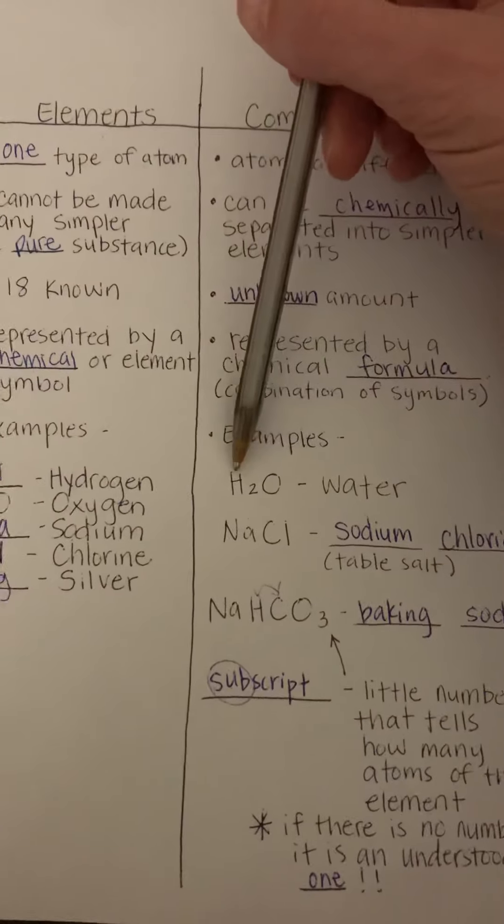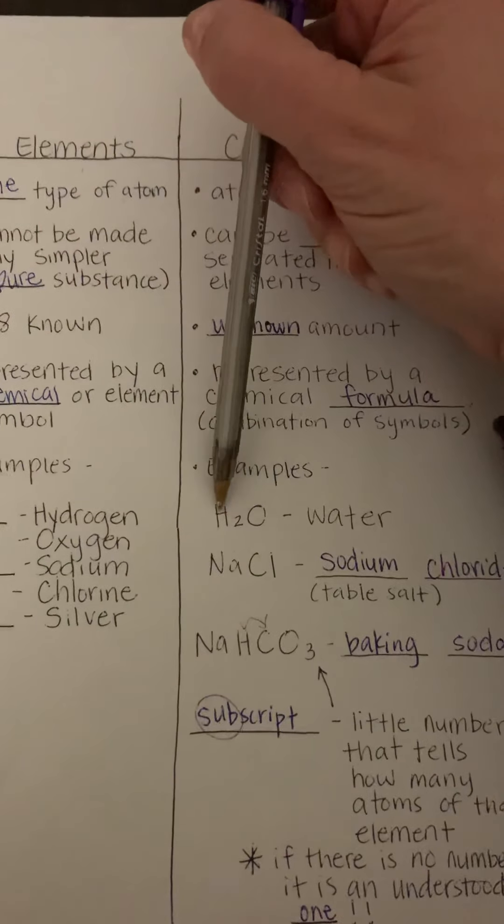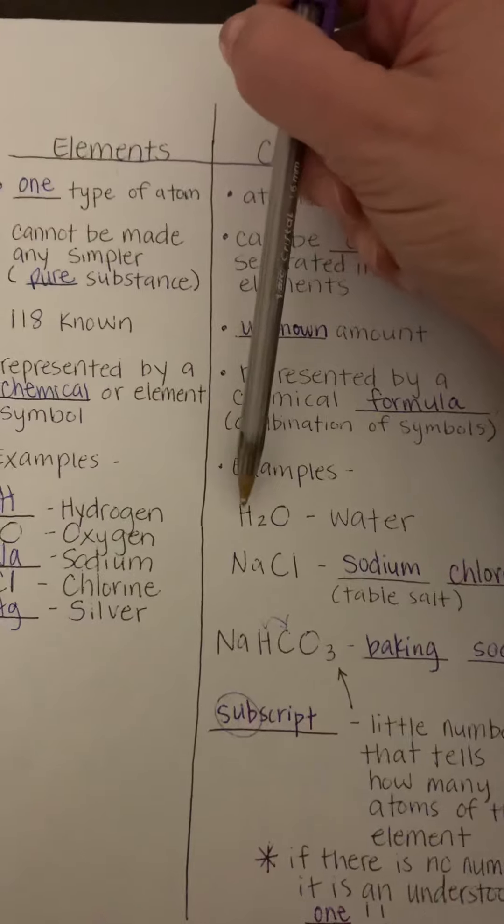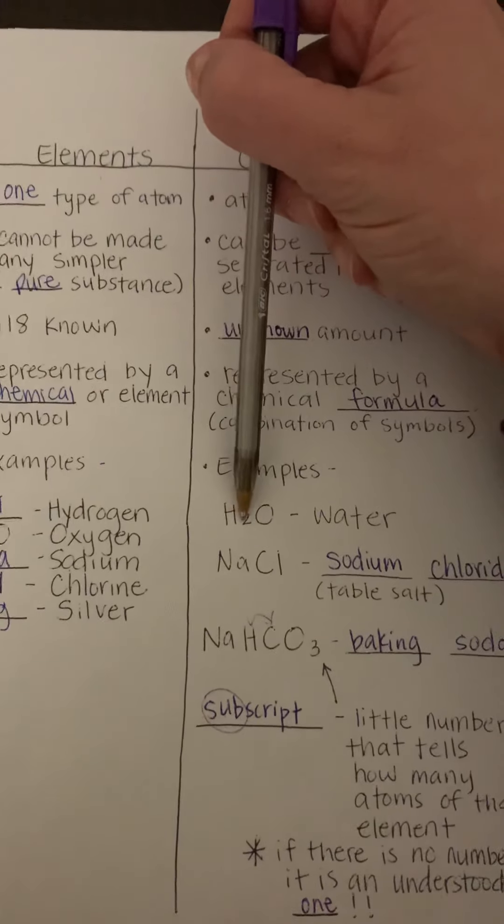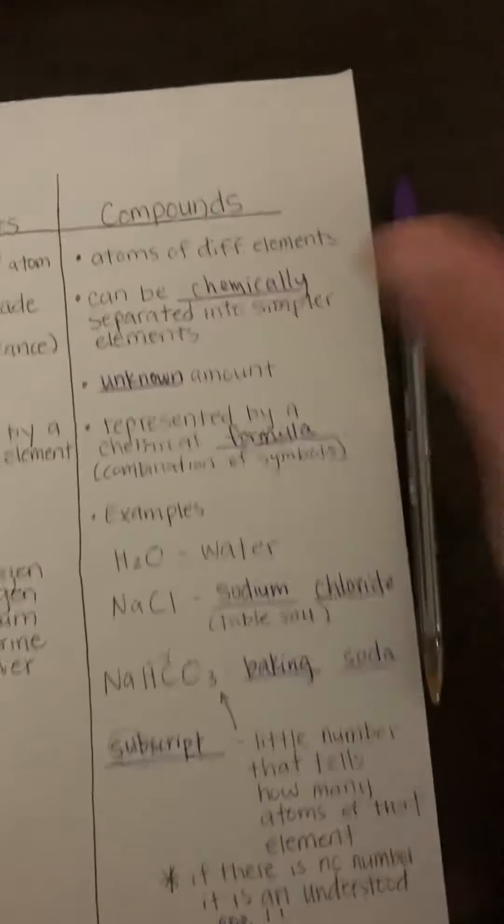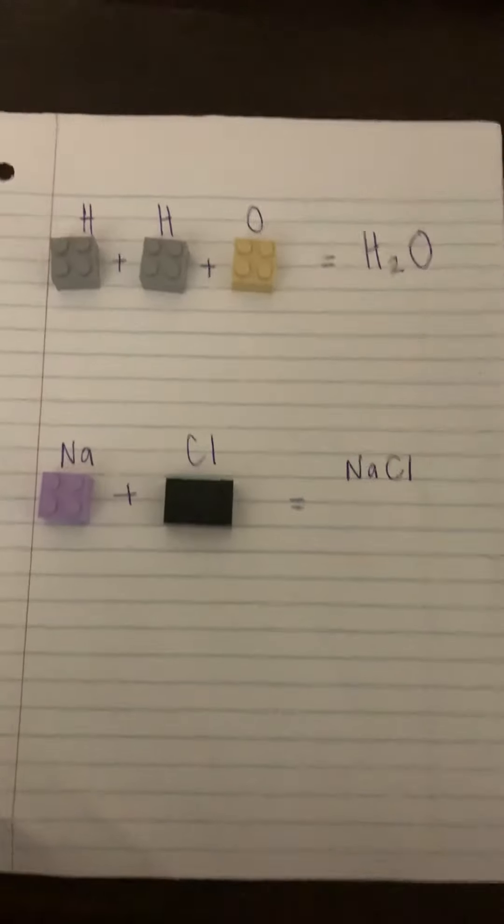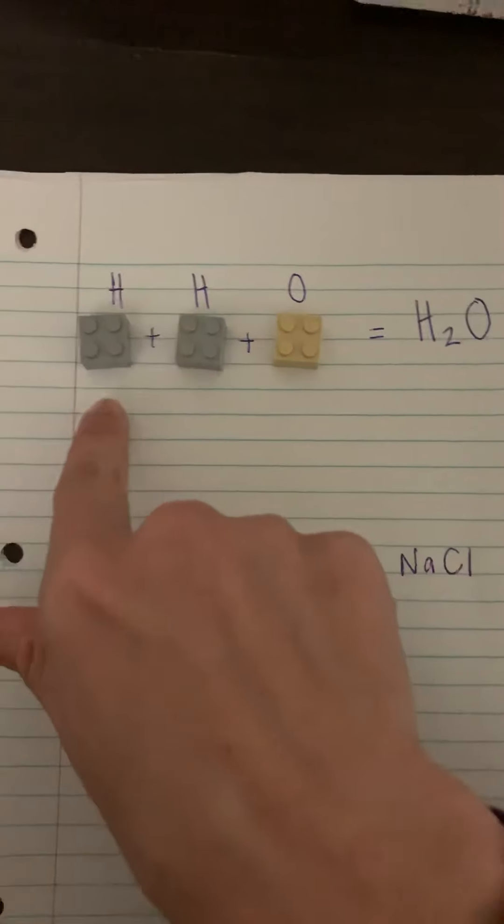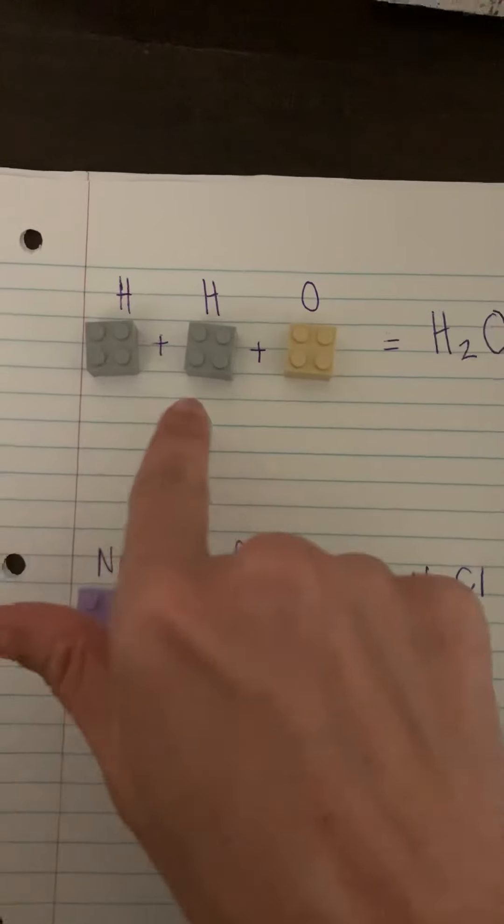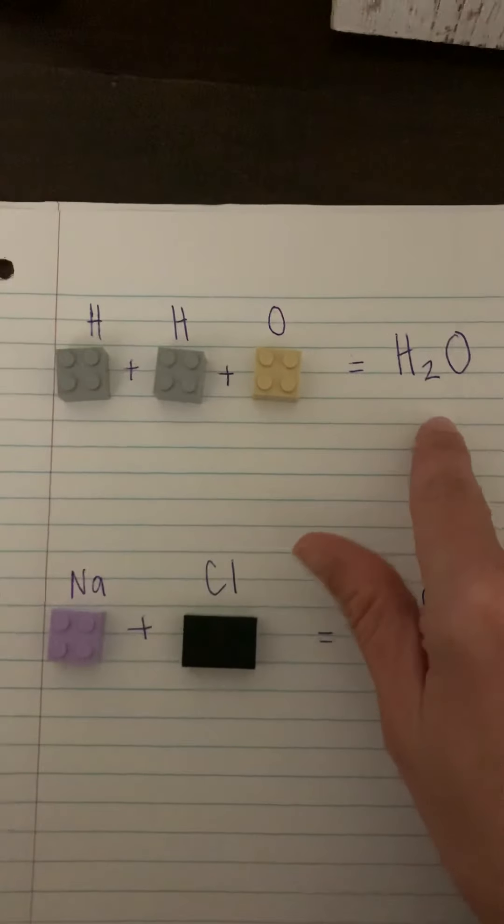So for example, H2O. This two tags along with the H, kind of like a little puppy following its owner. So H2O would mean that there's two hydrogen and one oxygen. So I have a little demonstration that we do in class - if you think about hydrogen, there's a hydrogen atom and another hydrogen atom plus one oxygen atom gives you H2O.